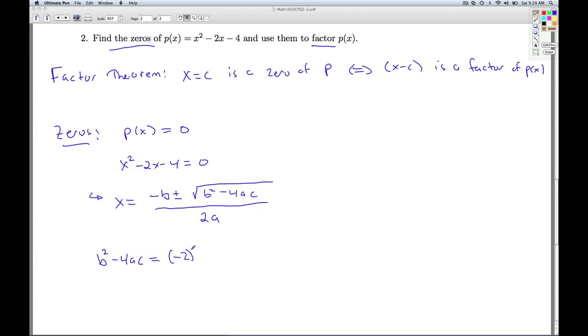So let's find the b squared minus 4ac to make sure we even have real zeros to begin with. The b squared, the b is negative 2, minus 4 times 1 times negative 4. And so we get 4 plus 16, which is 20. So I get the opposite of b, which would be 2, plus or minus the square root of 20 divided by 2. I can simplify the square root of 20. That's the square root of 4 times the square root of 5. So it's 2 plus or minus 2 square root of 5 over 2. And I can simplify this even more by factoring the 2 out. And so I get x equals 1 plus or minus square root of 5.